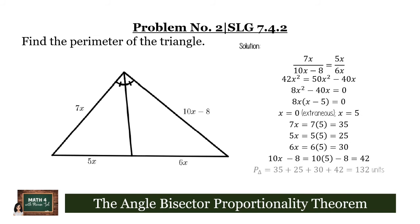To find the perimeter of the triangle, we will have to add all the sides. We will have 35 plus 25 plus 30 plus 42, and that is now equal to 132 units. So, the perimeter of this triangle is 132 units.